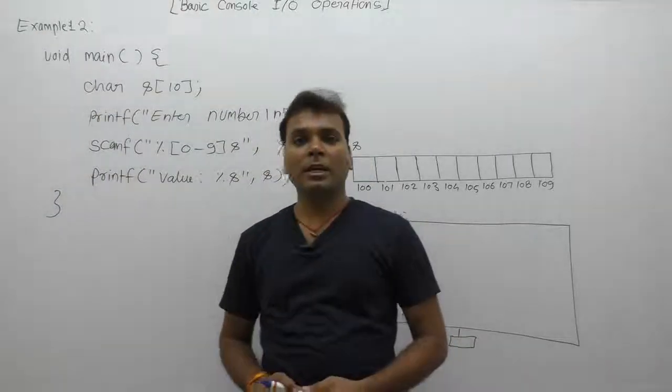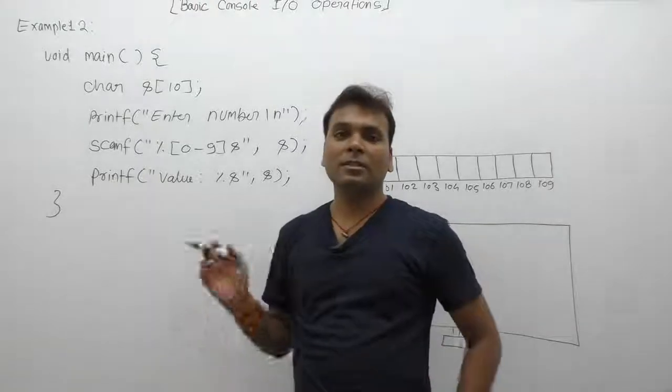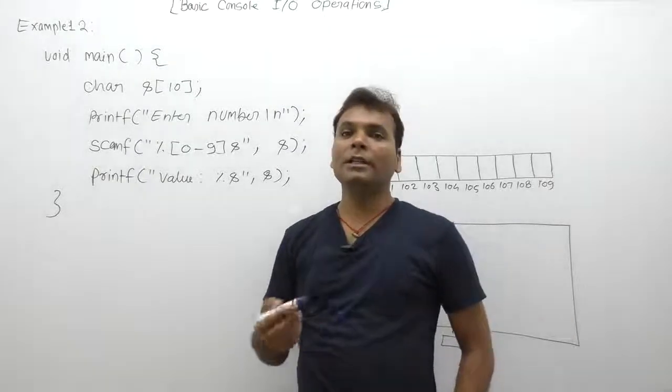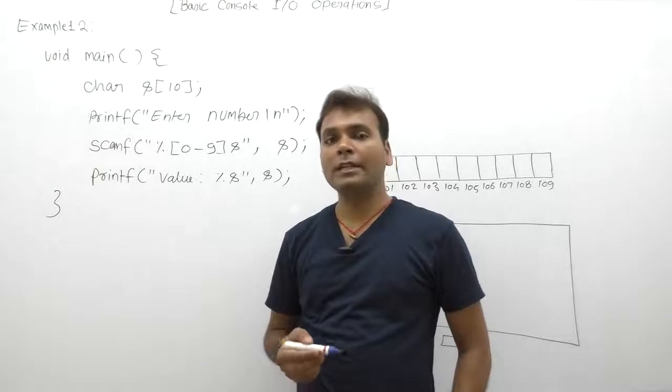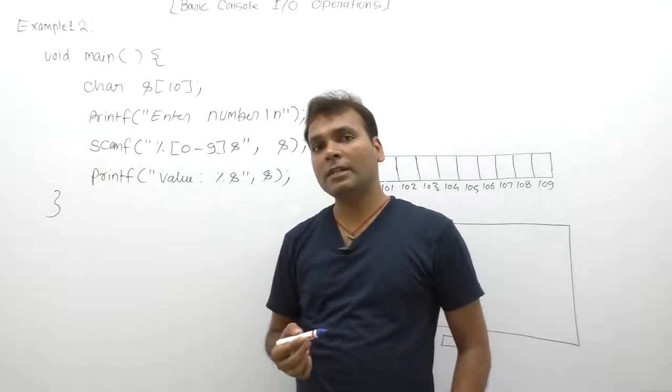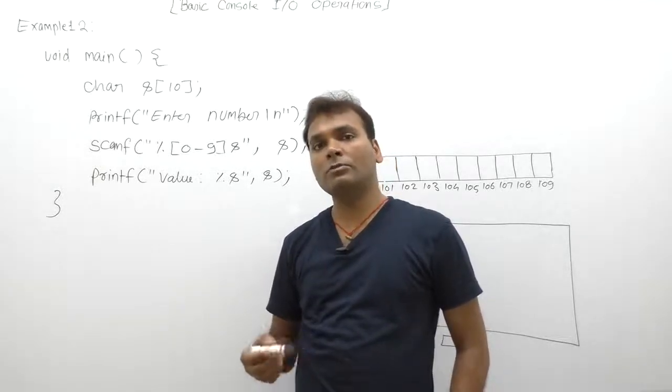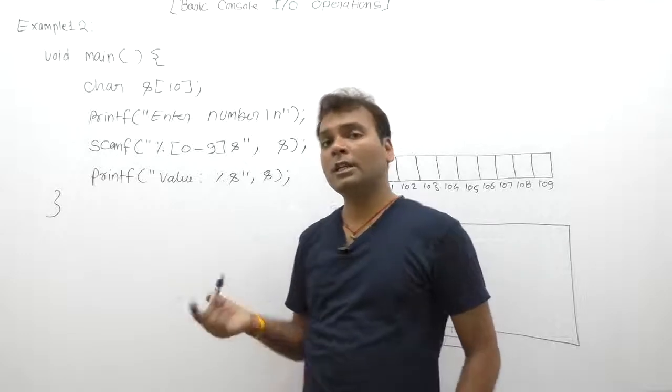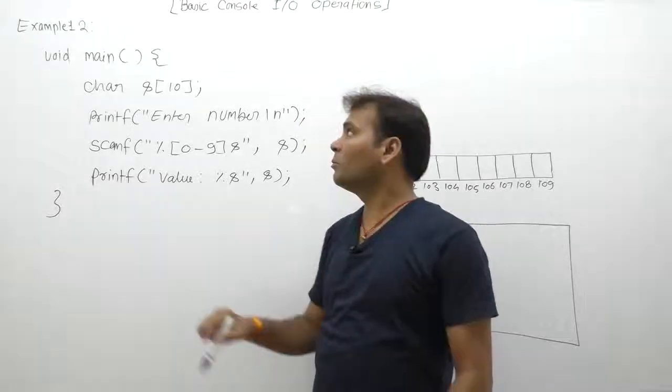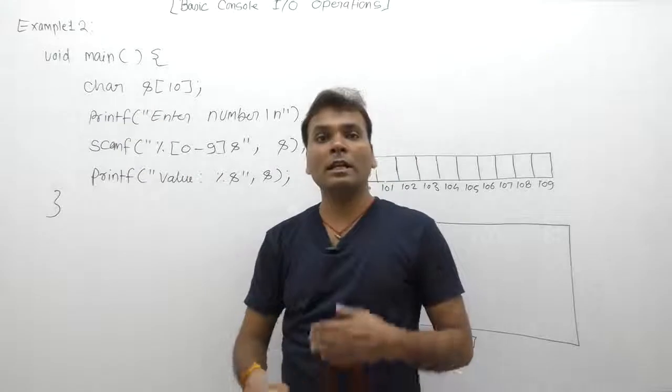Next example about regular expressions. Here we are reading only decimal integers, validating only from 0 to 9. We are reading numbers in the form of character arrays or as strings.